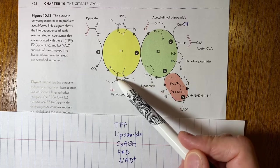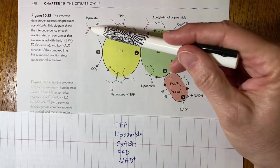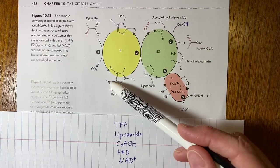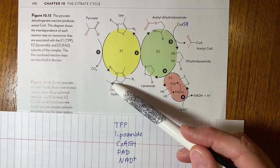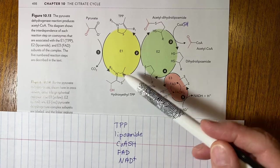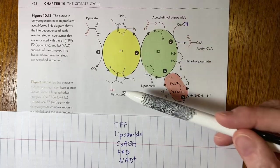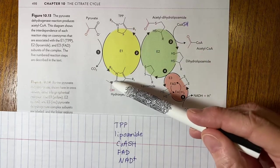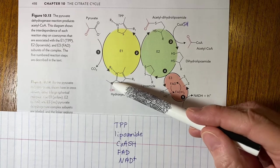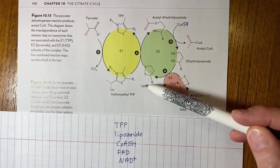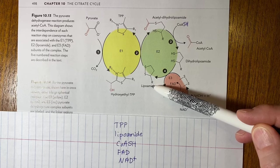Pyruvate will donate its acetyl group which is the part in red to TPP. The active part of TPP is shown here so this acetyl group becomes hydroxylated and it gets grabbed by the TPP whereas the rest of the pyruvate goes away as CO2. The TPP then will hand off this hydroxylated carbon unit to lipoamide which is right here.